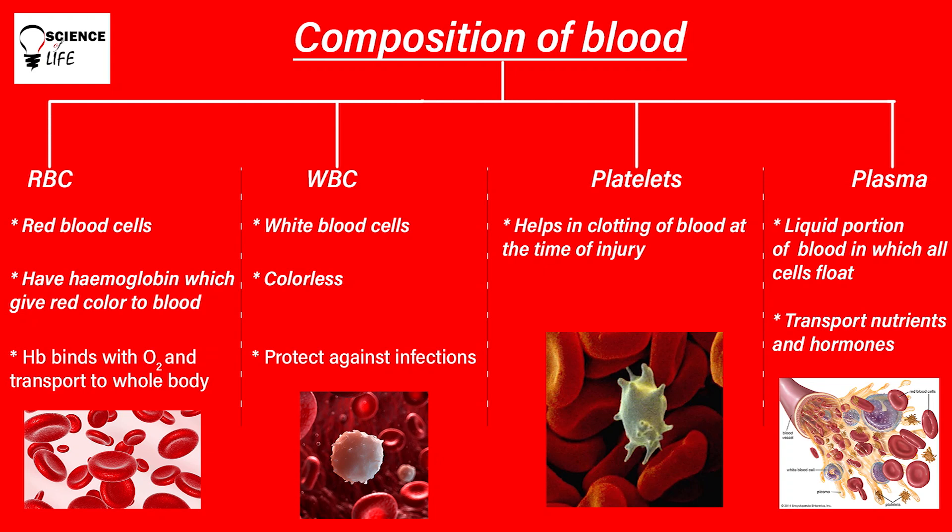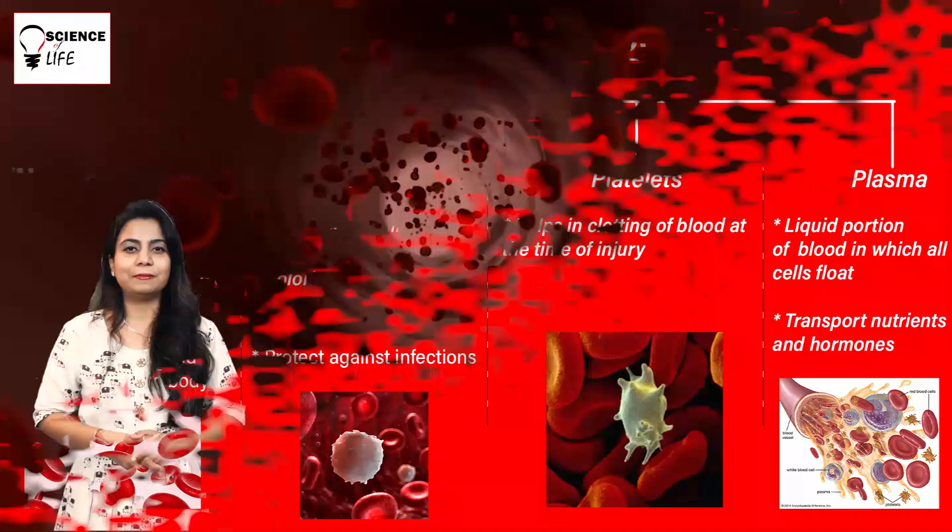Coming to the last category, that is plasma. Plasma is the liquid portion of the blood which transports all the nutrients and hormones throughout our body. All these cells — RBC, WBC, platelets, and plasma — combinedly form the blood and help in transporting nutrients, hormones, and oxygen, regulating body temperature, and protecting us from diseases.